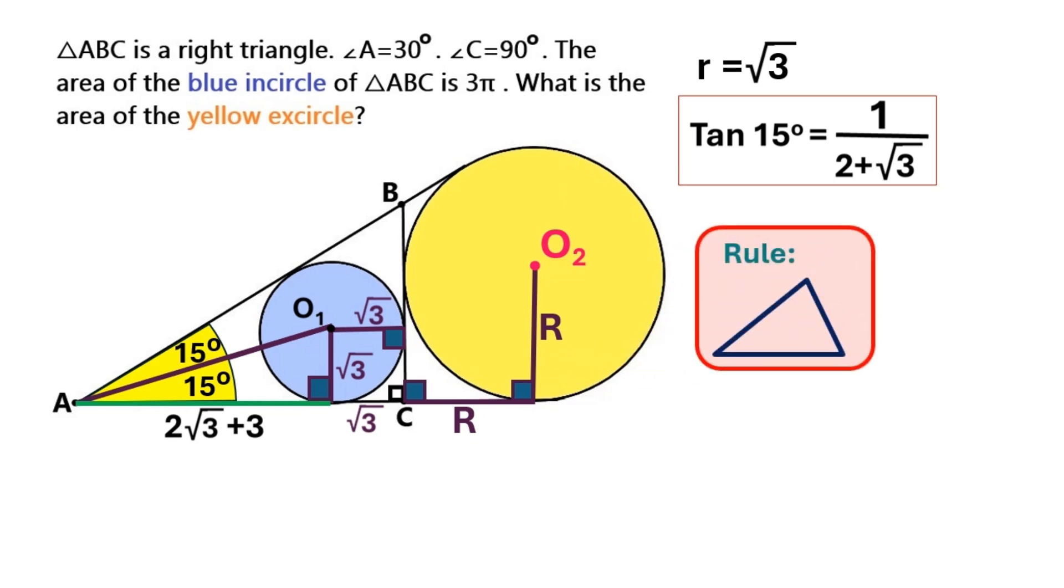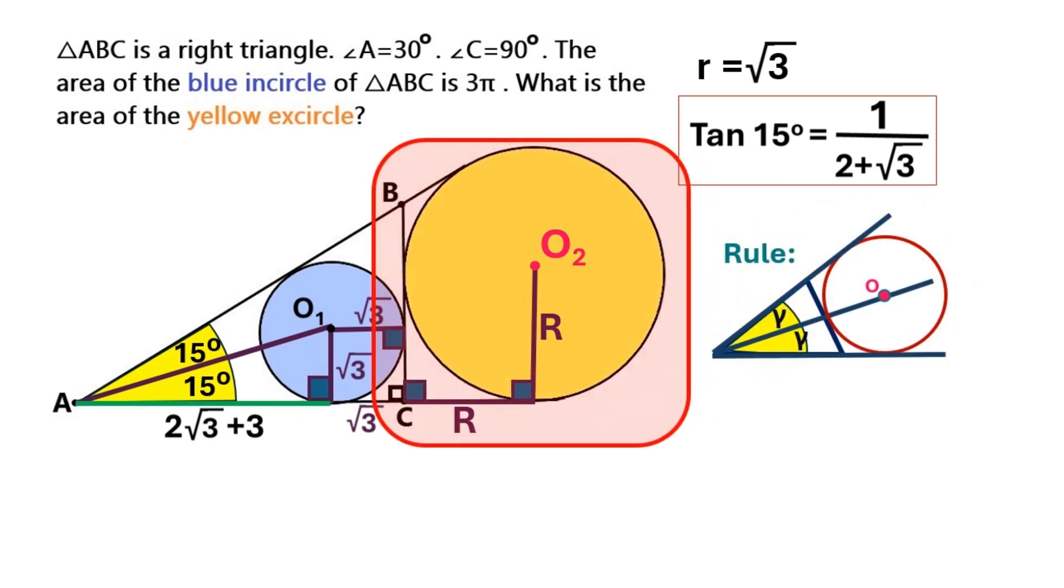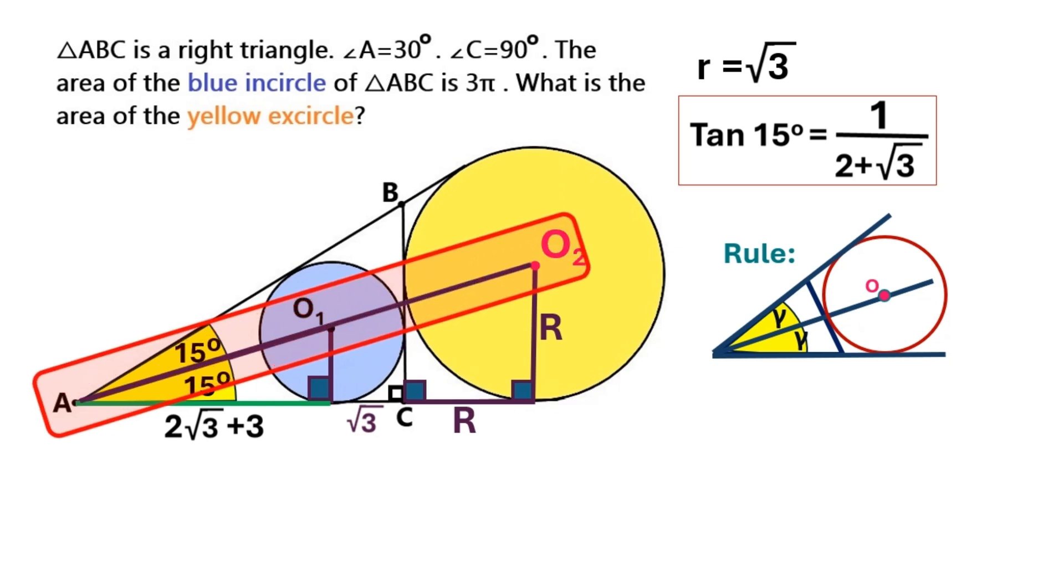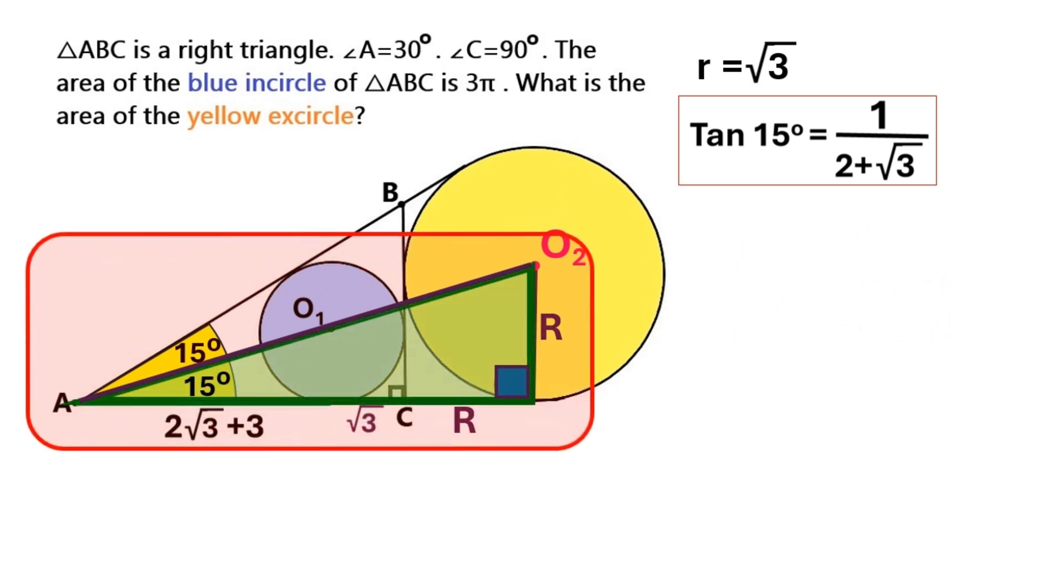Now there's a property of triangles that I need to show you. That is when you have an angle bisector in a triangle, you can extend it like this and it always crosses the excircle center. That's basically what we have in this yellow excircle. We've got this angle bisector here and we can extend it to the center of the yellow excircle, and we get this super cool right triangle.